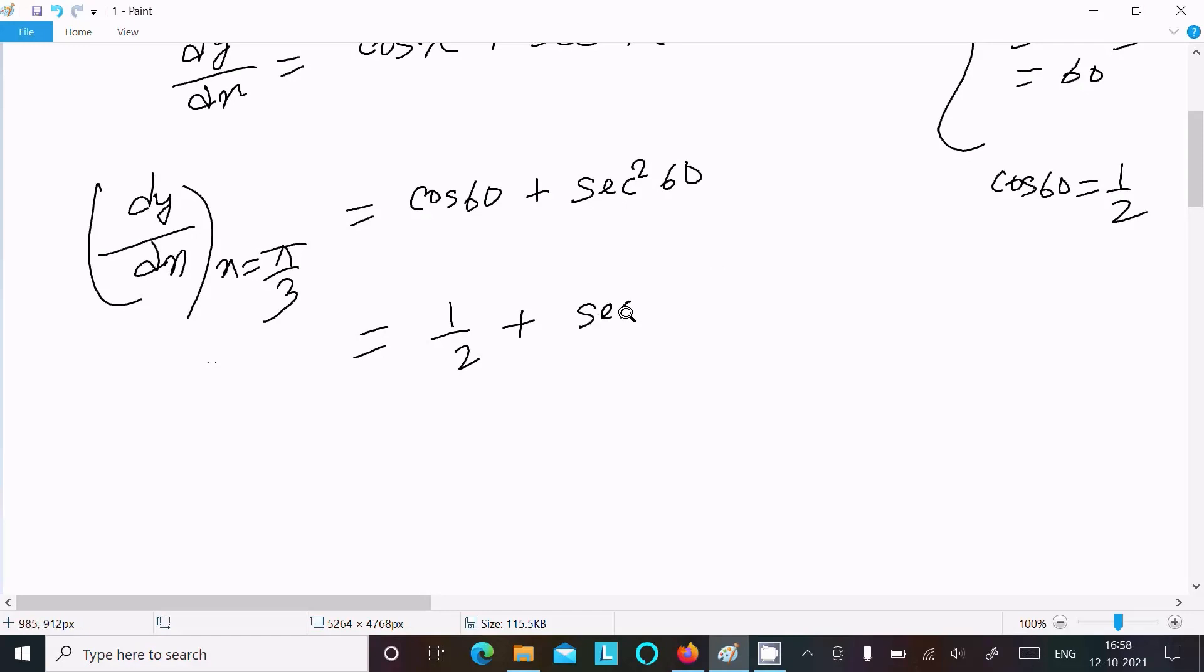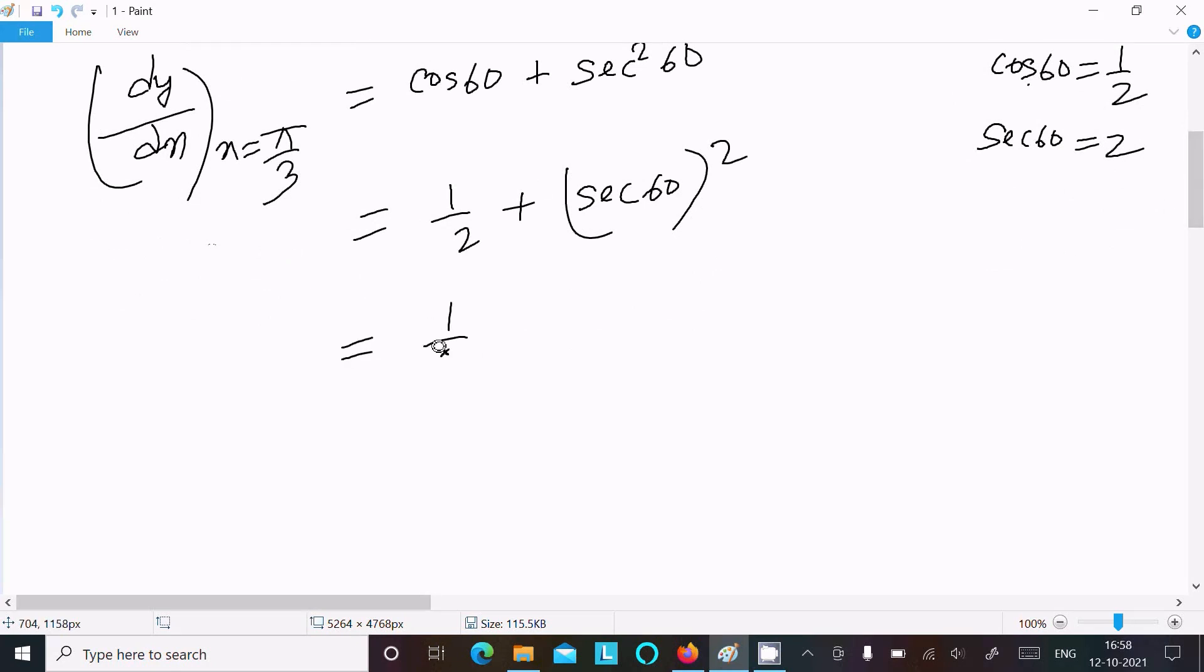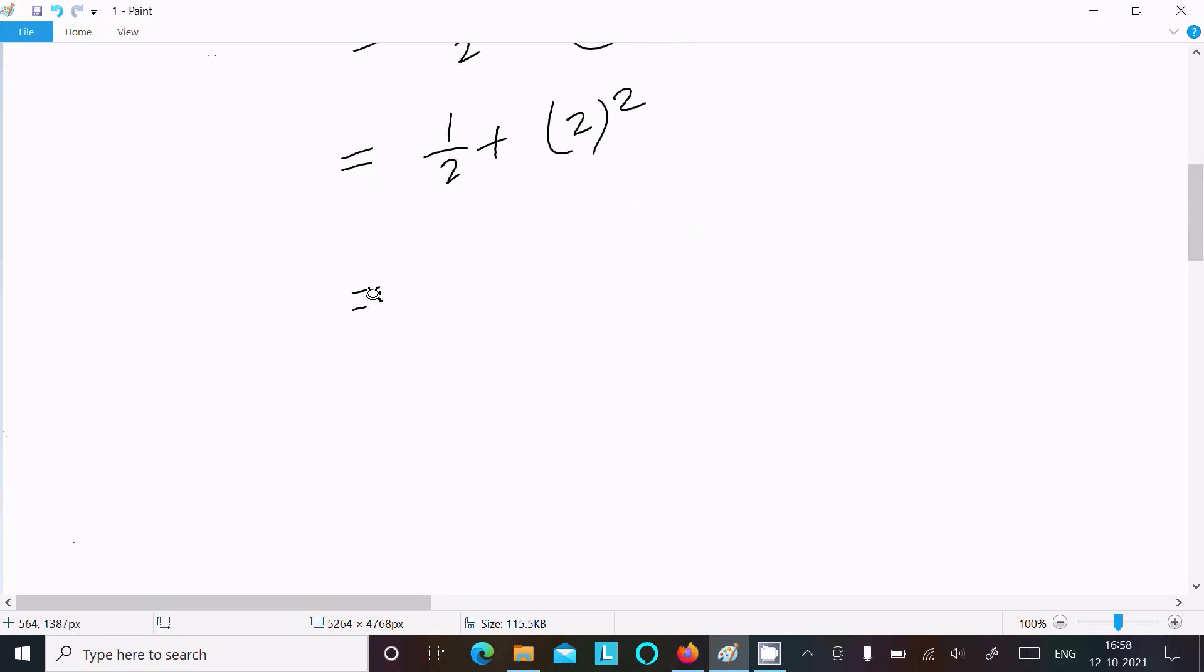And now we can write sec 60 whole squared. So here cos 60 is 1/2, then sec 60 is 2. So we can write (1/2) + 2² = (1/2) + 4.